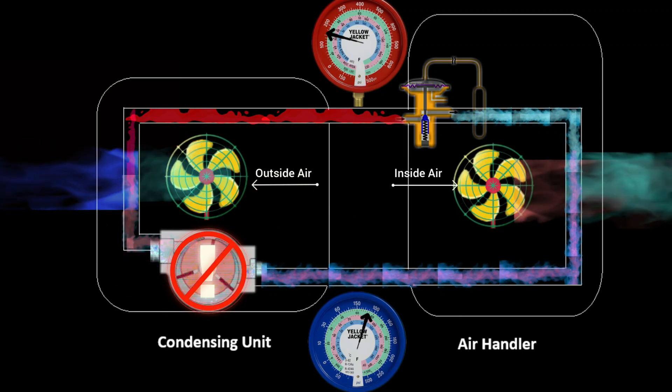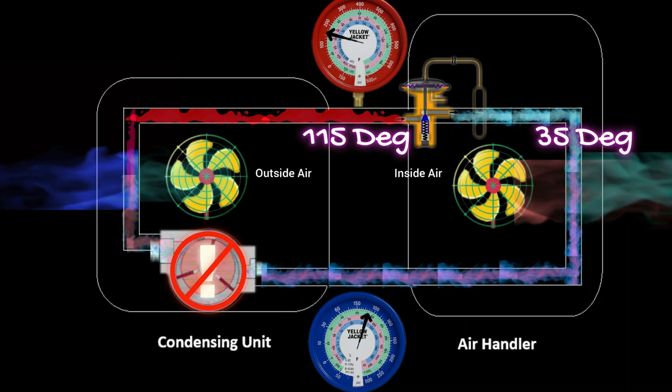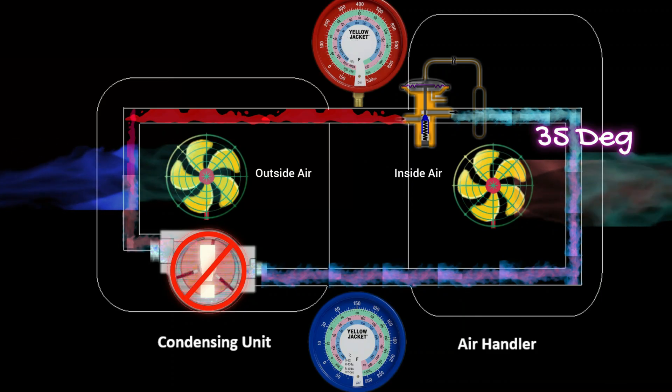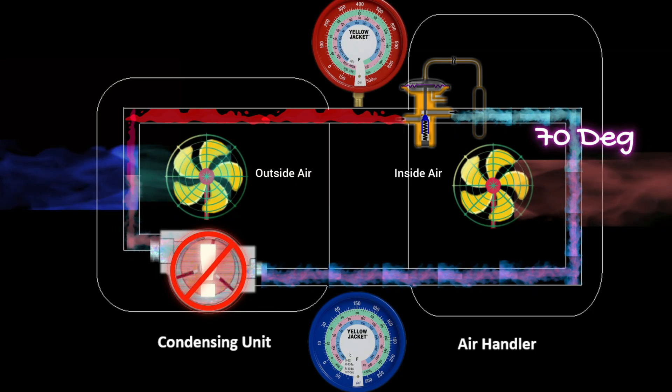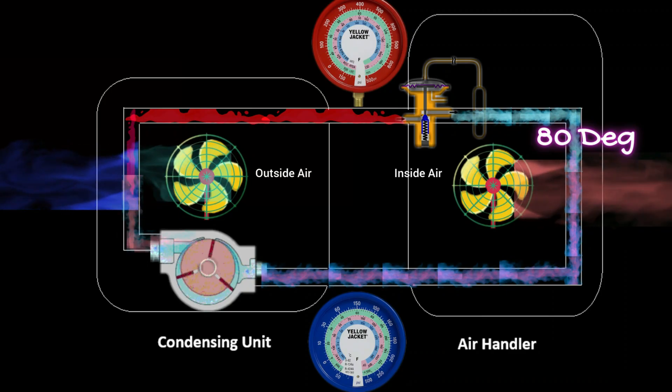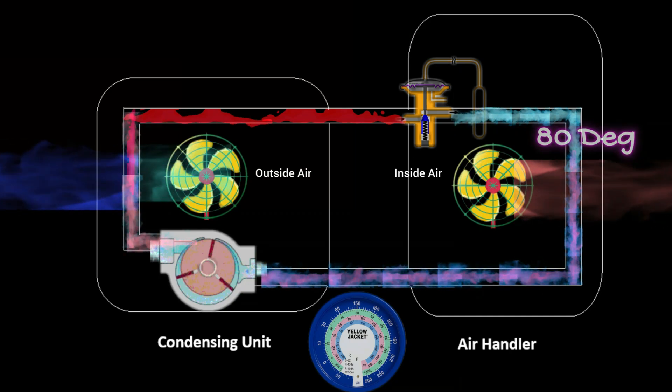On the other side of the system, at the evaporator coil, we have a very similar problem. When refrigerant flows through the metering device, it does the opposite of what the compressor does. It drops the pressure drastically. And so we get a big drop in temperature. The refrigerant in the evaporator coil is somewhere around 35 degrees. But because we're no longer introducing new refrigerant into the coil, that refrigerant is just sitting there. And it just continues to warm up as we move warmer air over that coil from inside the house. So your refrigerant may be 35. The air in the home is 80 degrees. And that refrigerant would just keep warming up until it equalizes. And so the air blowing out of our vents is going to be the same temperature as the air in the home.